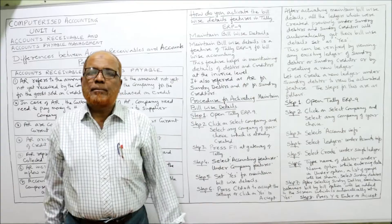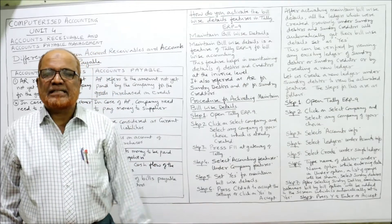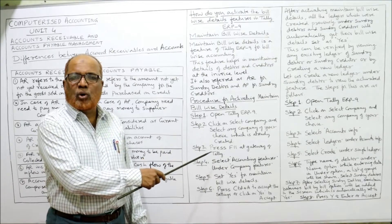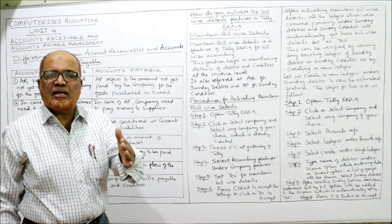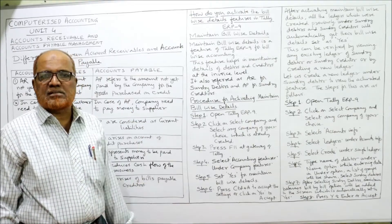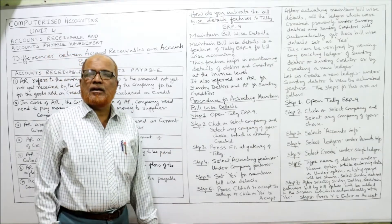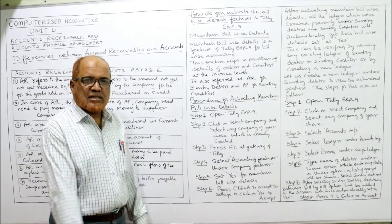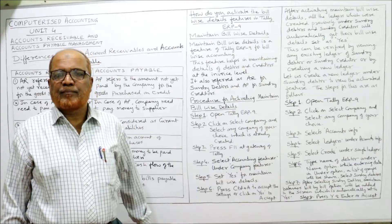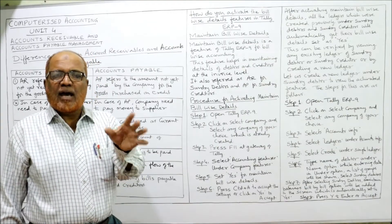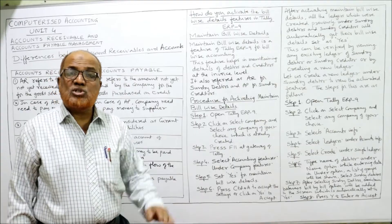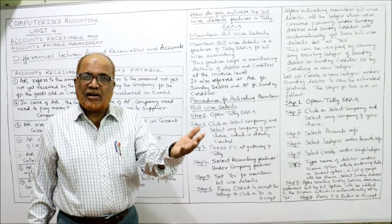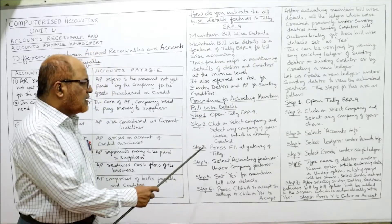The procedure for activating maintain bill-wise details — step by step. Step 1: Open Tally ERP-9 and open the gateway of Tally. Step 2: Click on select company and select the company of your choice that is already created.